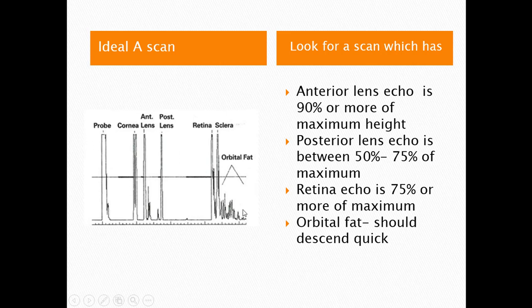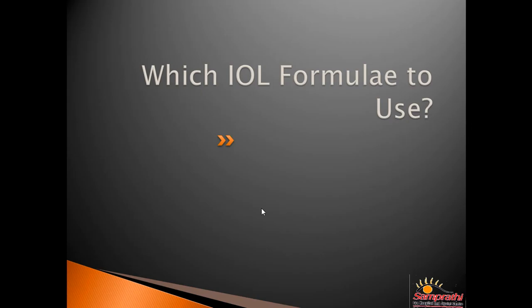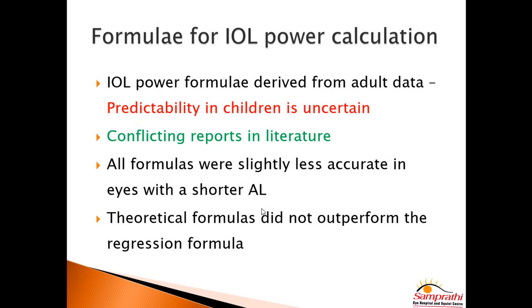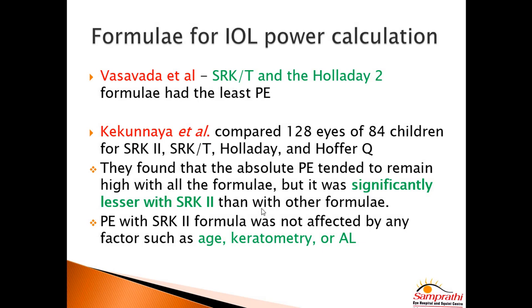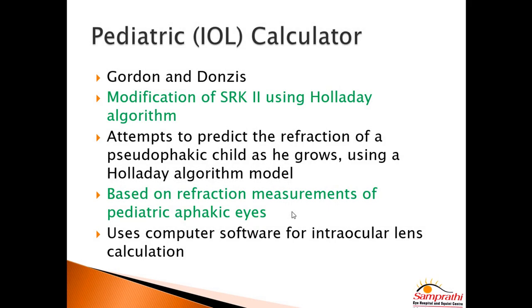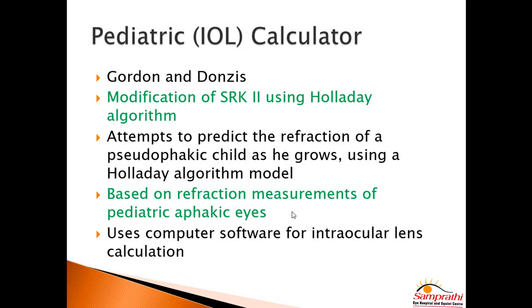Coming to which formula to use — as I said, all formulas are designed based on adult data, and there are many conflicting reports in the literature. Vasavada et al. concluded that SRK/T and Holladay 2 are the best formulas for children, whereas Kekunnaya feels SRK2 gives the least predictive error and is better for pediatric cataracts.